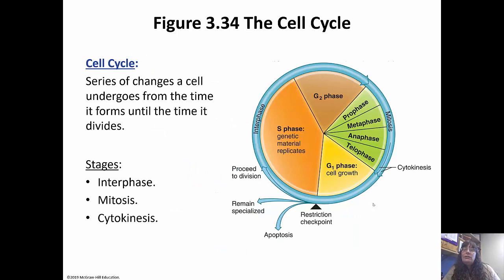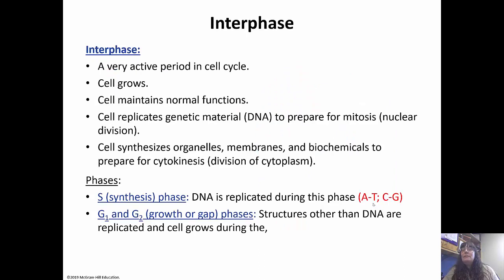The cell cycle is the series of changes cells go through when it's time to divide. It's divided into interphase, mitosis, and cytokinesis. Interphase has three phases and mitosis has four. Interphase is when the cell spends most of its time — growing, maintaining normal functions, replicating DNA, and synthesizing organelles, membranes, and other chemicals needed to divide. The S phase, or synthesis phase, is when DNA is replicated — adenine binds with thymine, and cytosine binds with guanine. This is called complementary base pairing. The G1 and G2 phases, or gap/growth phases, are when other structures replicate and cells grow.